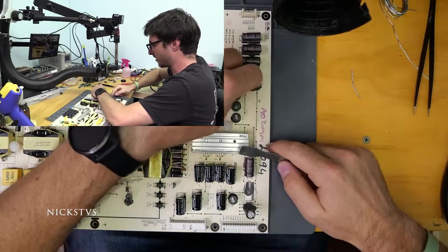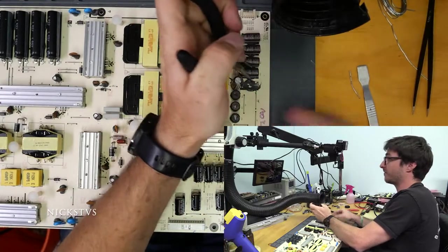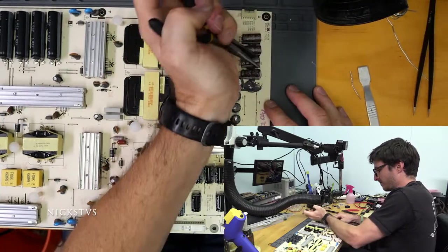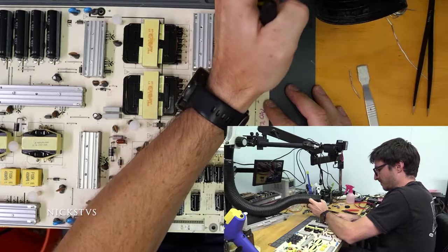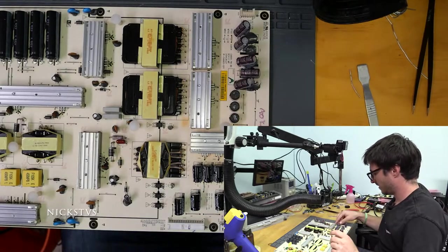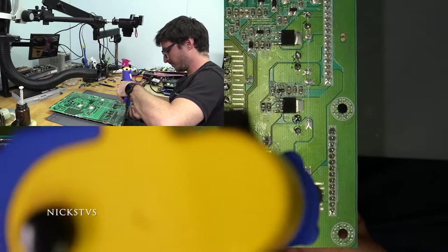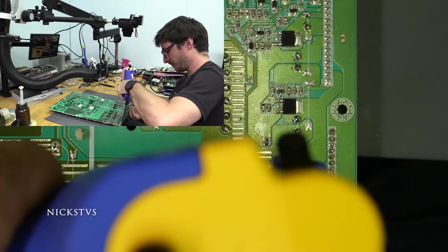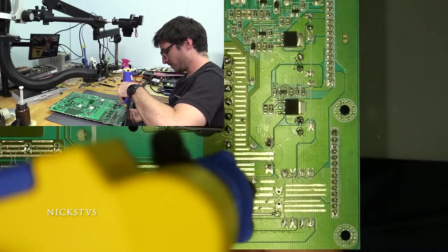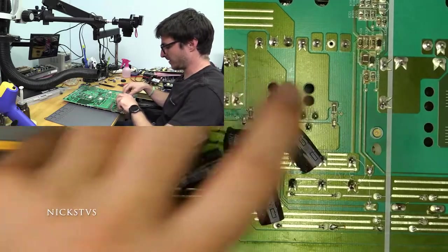And if you don't have one of these, you can also use pliers like these guys and just twist them off. Just like that. And same as before, we'll go ahead and flip the board over and start the desoldering process.